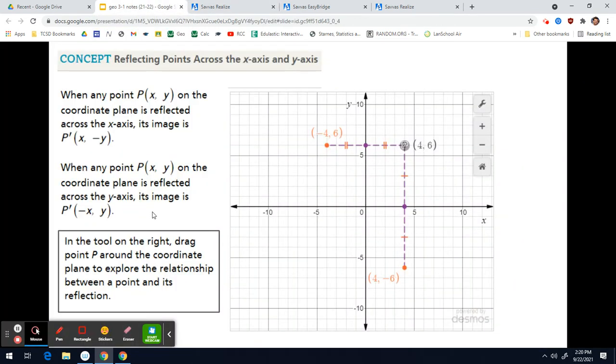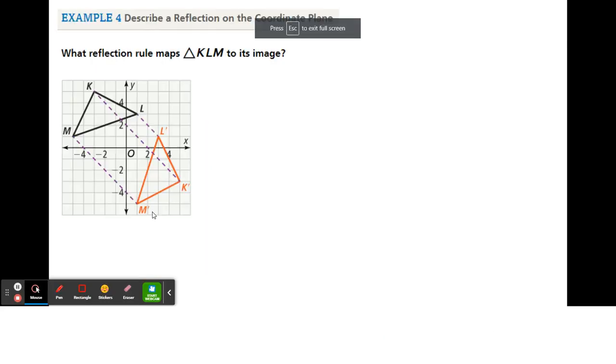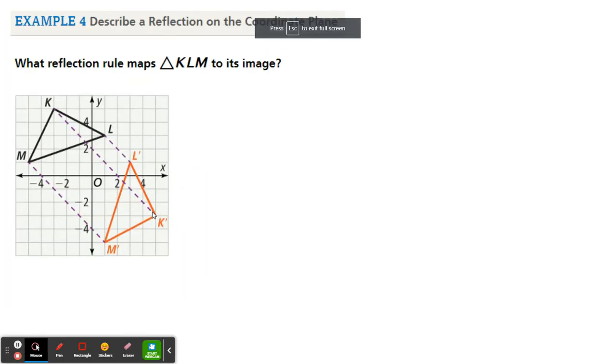Okay, well, what if we're not reflecting across those axes? Let's take a look at the next slide here. Okay, so it says, what reflection rule maps triangle KLM to its image?